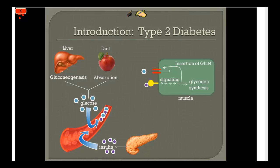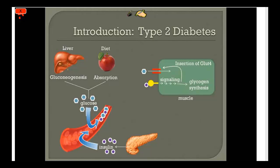For board exams you should know more about the downstream signaling. Insulin binds to its extracellular receptor and initiates a cascade of phosphorylation, eventually activating glycogen synthase — the rate-limiting step enzyme for glycogen synthesis. It also causes insertion of the GLUT4 receptor into the membrane, allowing glucose to enter the cell. In diabetes, insulin becomes less potent, so it takes more and more to activate the receptor and initiate that cascade.